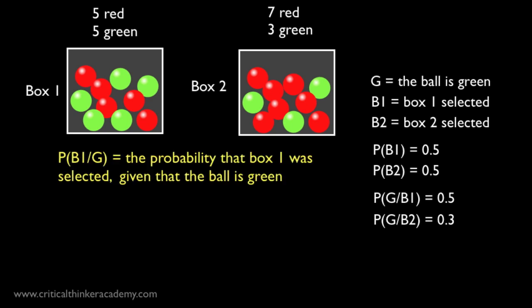Now, what is it that we want to calculate? It's this, the probability that box 1 was selected, given that the ball is green. Now let's look at Bayes' Rule.